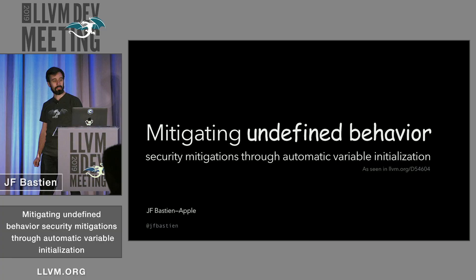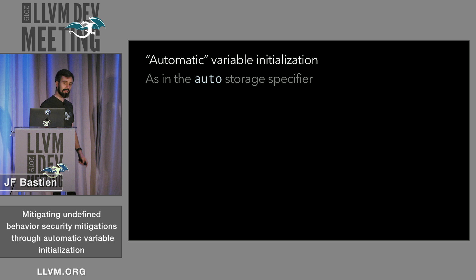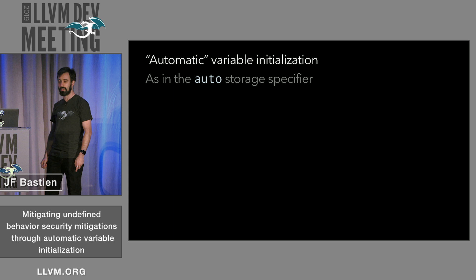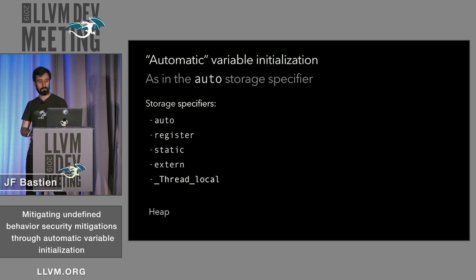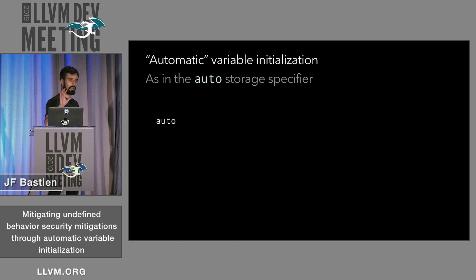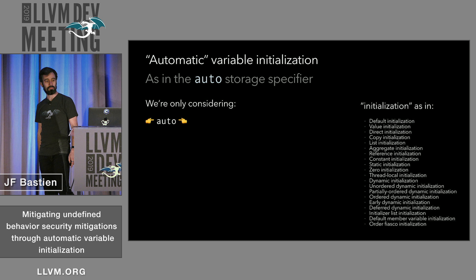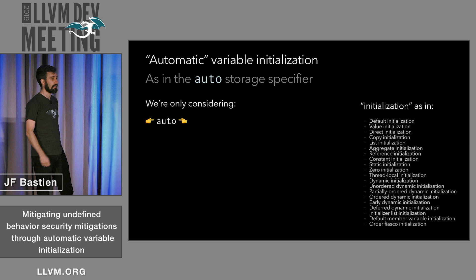What do I mean by automatic variable initialization? When I say automatic, I mean as in the auto keyword — not the C++11 auto keyword, but the auto storage specifier from pre-C++11. These are storage specifiers in C and C++ that define where things are stored. Roughly, auto means somewhere in the stack. Today I'm only talking about auto stuff — anything on the stack that's initialized or uninitialized is the scope of this talk, including the undefined behavior inherent in those things.